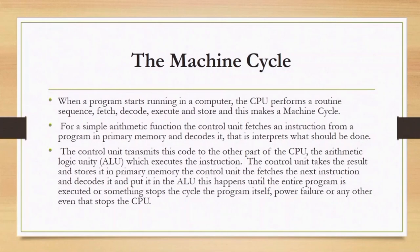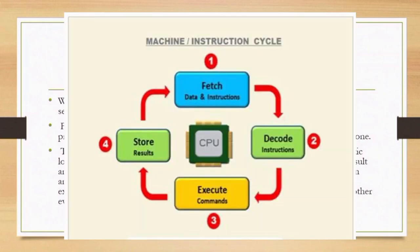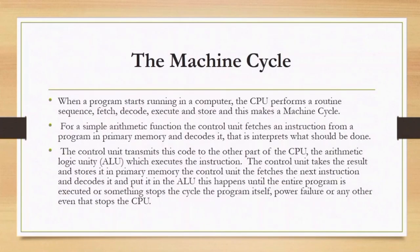The machine cycle: when a program starts running on a computer, the CPU performs a routine sequence. First, it fetches the instructions. Then it decodes — converting from one format to another so it can be understood by the machine. After it has been understood, it is executed and the result is stored in memory for display. That process makes up the machine cycle.